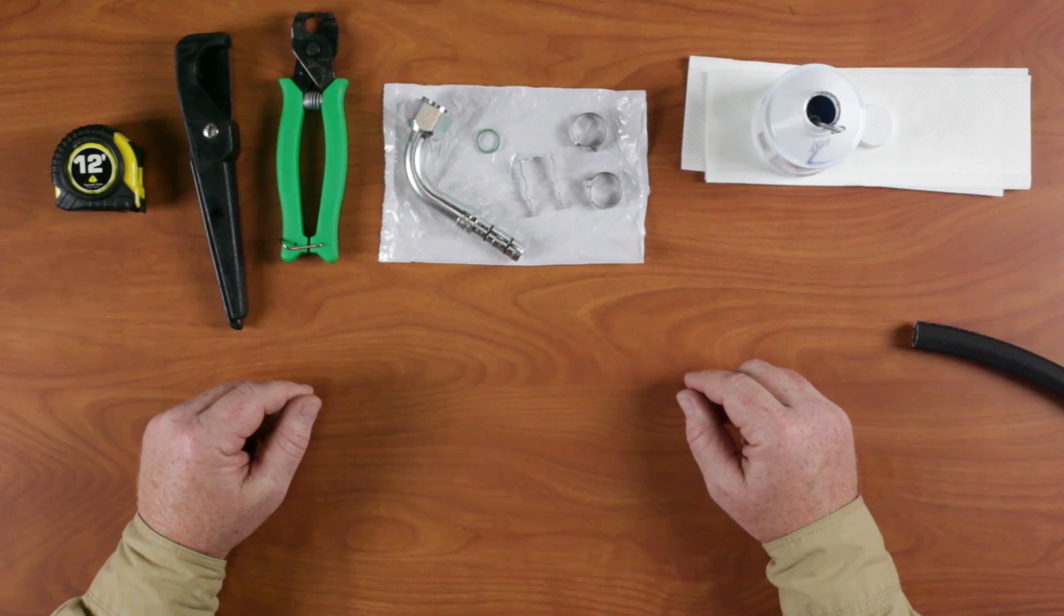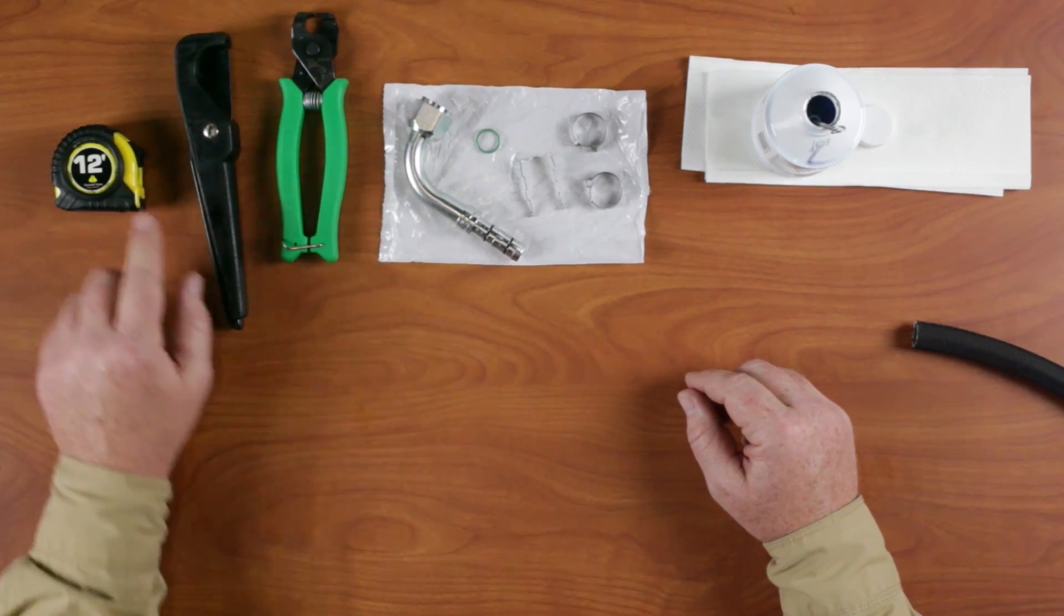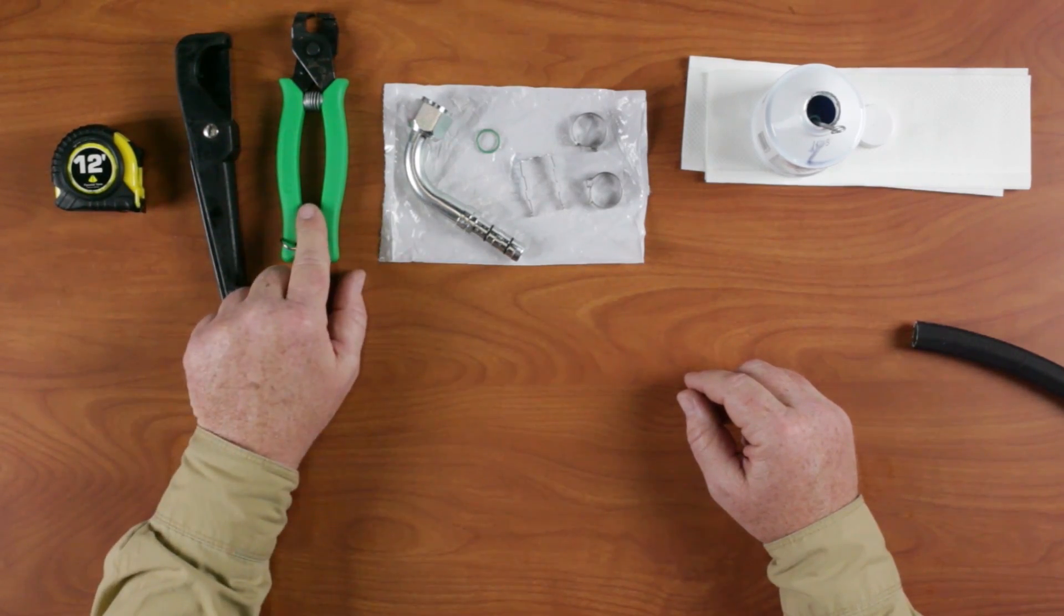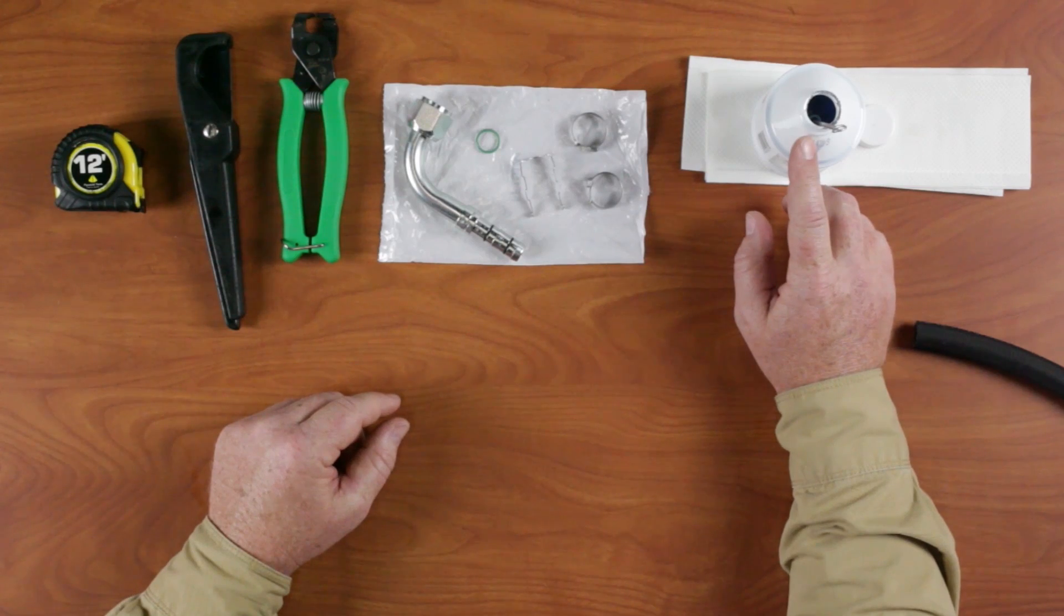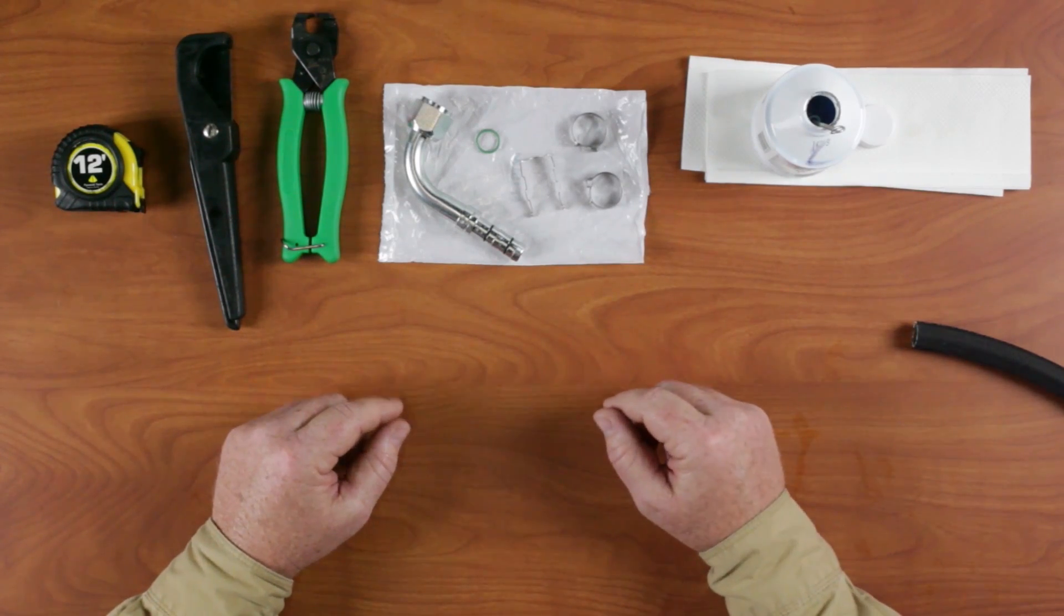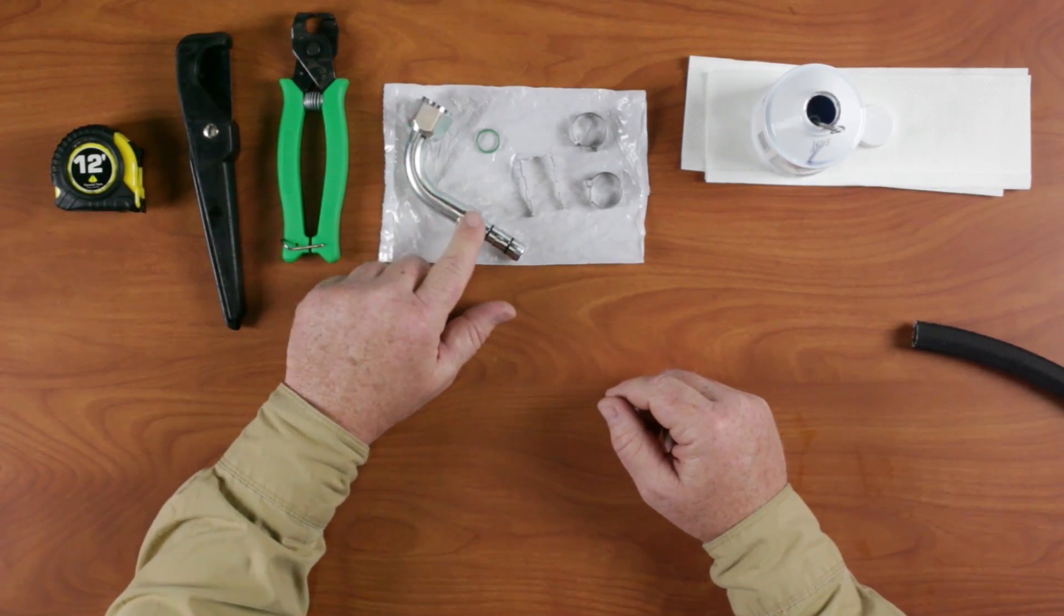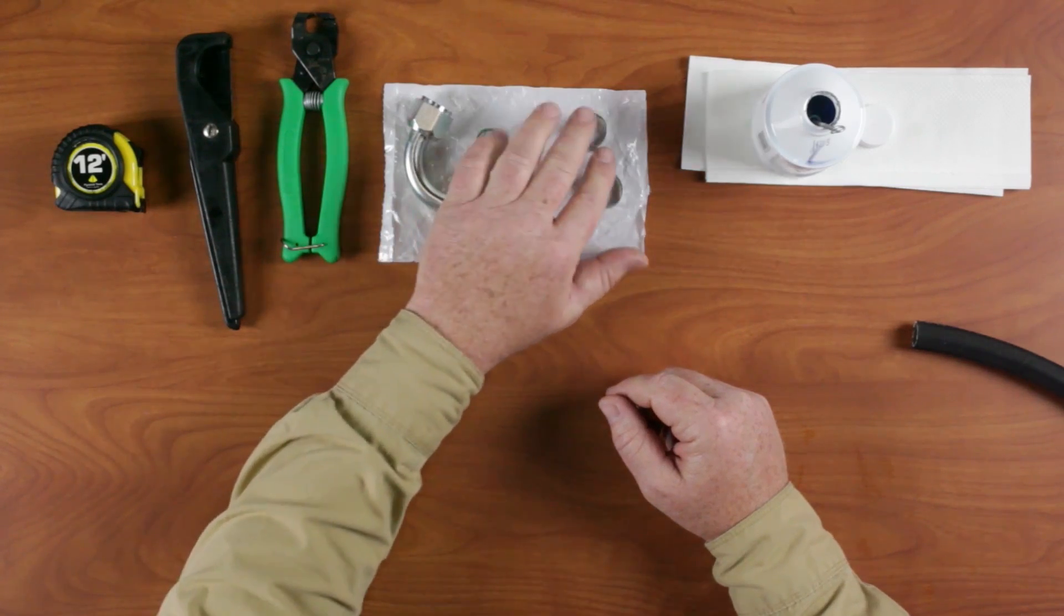Assembly is simple and requires a minimum of equipment: just a tape measure, a hose cutter, and a pair of clip pliers and a small amount of refrigerant oil. The kit consists of a nipple assembly with o-rings, clip cage, and two clips.